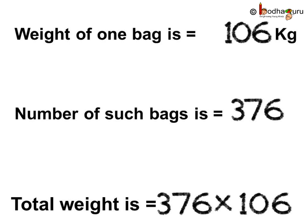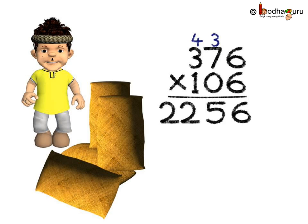Since we need to find the weight of 376 wheat bags, we need to multiply the weight of one wheat bag with the total number of bags which is 376. So the total weight of the wheat bags is equal to 376 multiplied by 106. Let us multiply 376 by 106.